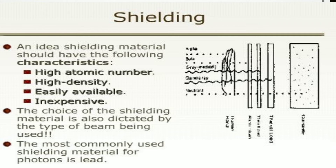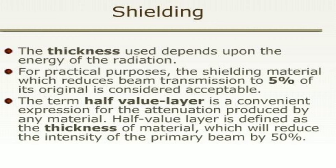The shielding material should have characteristics like high atomic number, high density, easily available, and inexpensive. The choice of shielding material is dictated by the type of beam used, and the most commonly used shielding material for photons is lead. Thickness depends upon the beam energy. For practical purposes, shielding material which reduces beam transmission to 5% of its original is considered acceptable.